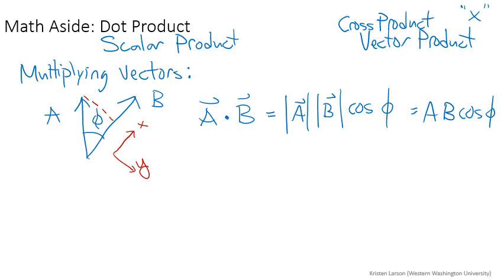So if I were to take A then and separate it into components, notice that the component that is along B, the X component in this coordinate system AX, is equal to the magnitude A cosine of phi. So really you can think about this as just A cosine phi times B.